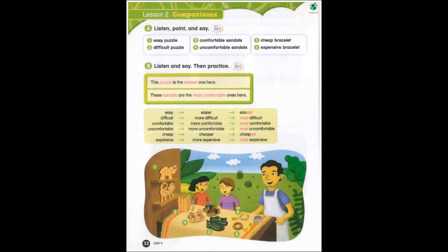Page 32. Lesson 2. Comparisons. A. Listen, point, and say. Easy puzzle. Difficult puzzle. Comfortable sandals. Uncomfortable sandals. Cheap bracelet. Expensive bracelet.